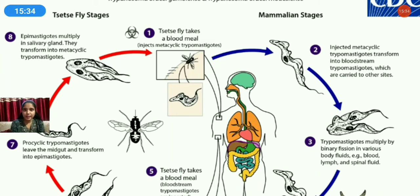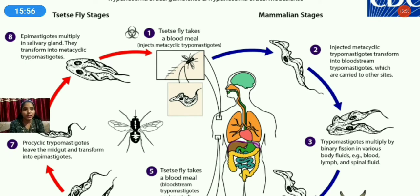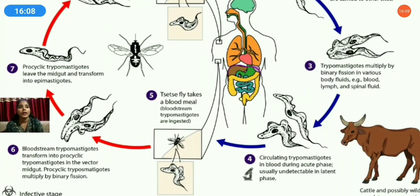The infective stage entering the human is the metacyclic trypomastigote. In the human body, binary fission occurs in various body fluids — blood, lymph, and spinal fluid — and the parasites multiply.